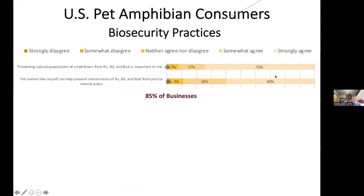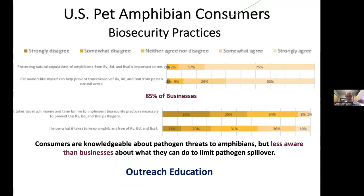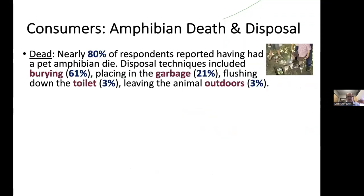When it came to consumers, they were knowledgeable about pathogen threats to amphibians, but they were less aware than businesses about what they could do — really emphasizing where outreach education could be directed. We asked what they did if they had a dead amphibian: 80% indicated they had had a dead amphibian at some point, and most buried the animal outside, which we do with a lot of our pets. There is some risk of spillover by just burying an animal, but it's probably not as big a deal as leaving the animal outdoors, which some individuals did. A few flushed them down the toilet.